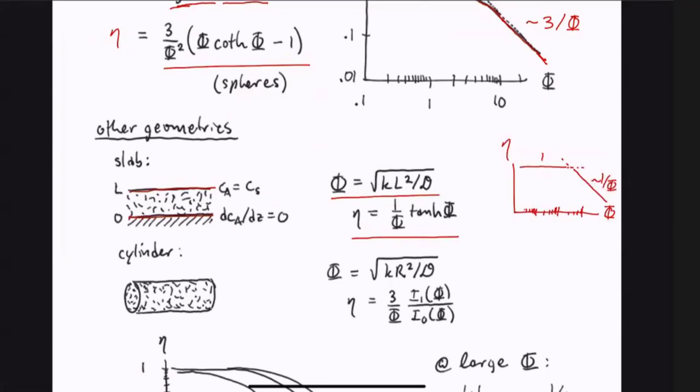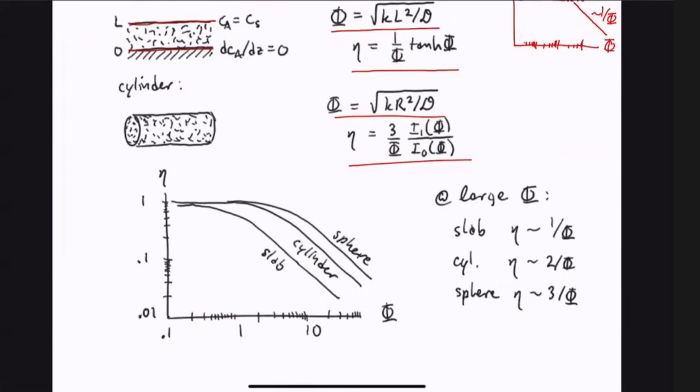If we redid this for a cylinder, the math is a little harder. KR²/D, same Thiele modulus, and the effectiveness factor is 3I₁(φ) over φI₀(φ), which asymptotically follows 2/φ. η plotted on a log scale versus φ on a log scale looks like this. You have the spherical result 3/φ, the cylindrical result going to 2/φ, and the slab result going to 1/φ. They all, at very small values of φ, approach one. You can anticipate where these things cross over as the intersection with one for each case: slab, cylinder, and sphere.